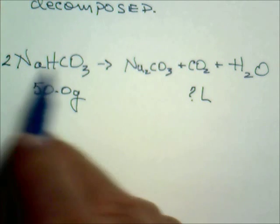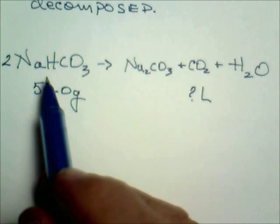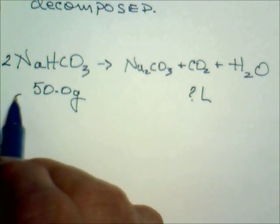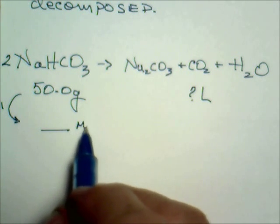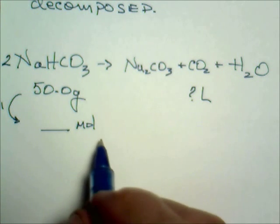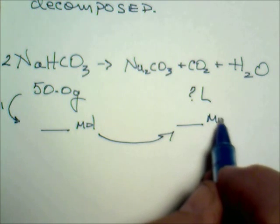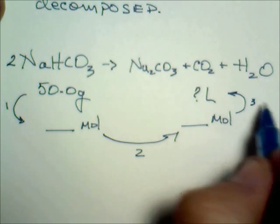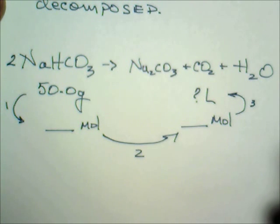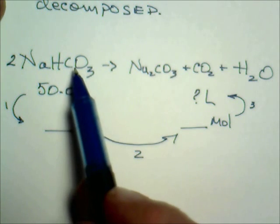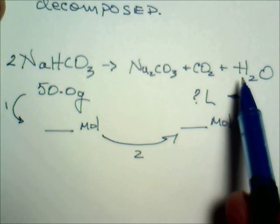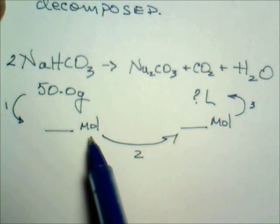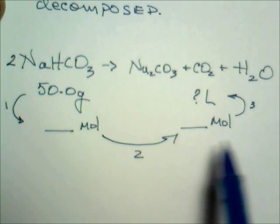Since coefficients only tell us about moles, we need to work in moles. Our three-step plan is: first, convert grams of sodium bicarbonate to moles; second, use the mole ratio to find moles of carbon dioxide; and third, convert moles of carbon dioxide to liters.